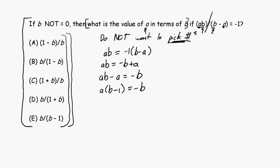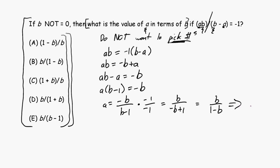I look at my answer choices and negative B over (B minus 1) isn't there. I know how the GMAT works — as a secondary trigger, sometimes I want to multiply a fraction by a version of 1. Here I can do that by multiplying by negative 1 over negative 1. That gives me B over (negative B plus 1), which equals B over (1 minus B), which is answer choice B. Answer choice B is our correct answer.